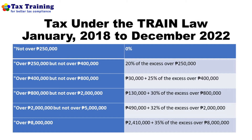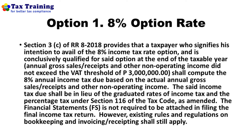For Option 1, the eight percent option rate — who are qualified to opt for this? Under Section 3 of RR8-2018, the taxpayer must signify his intention to avail of the eight percent income tax rate option. The blogger should go to the BIR and register the option rate, informing the BIR that he opted for the eight percent rate, so that percentage tax will no longer be listed as a tax type in the certificate of registration.